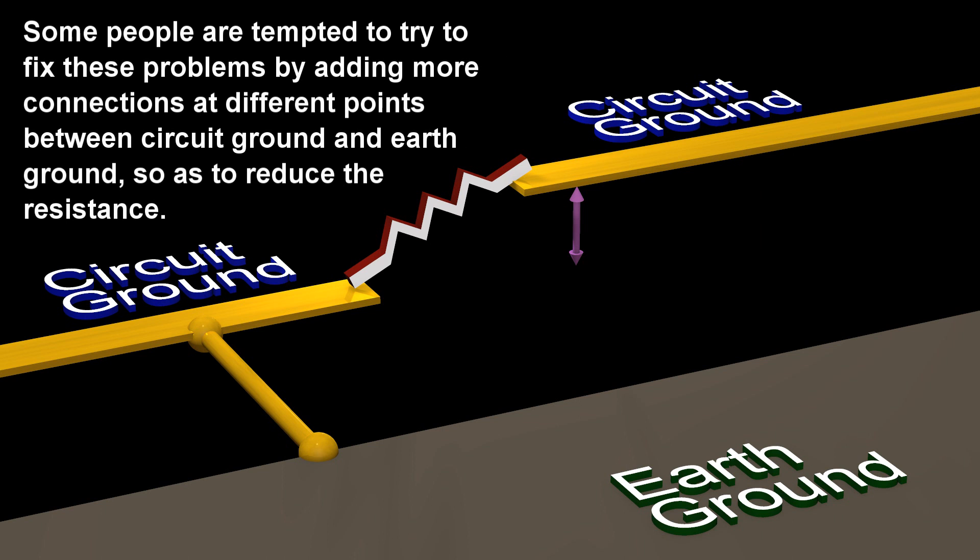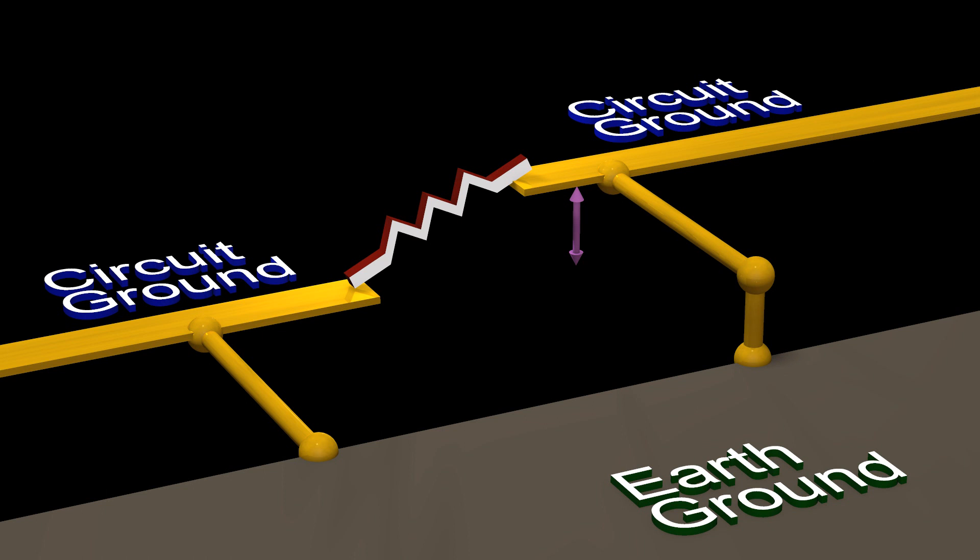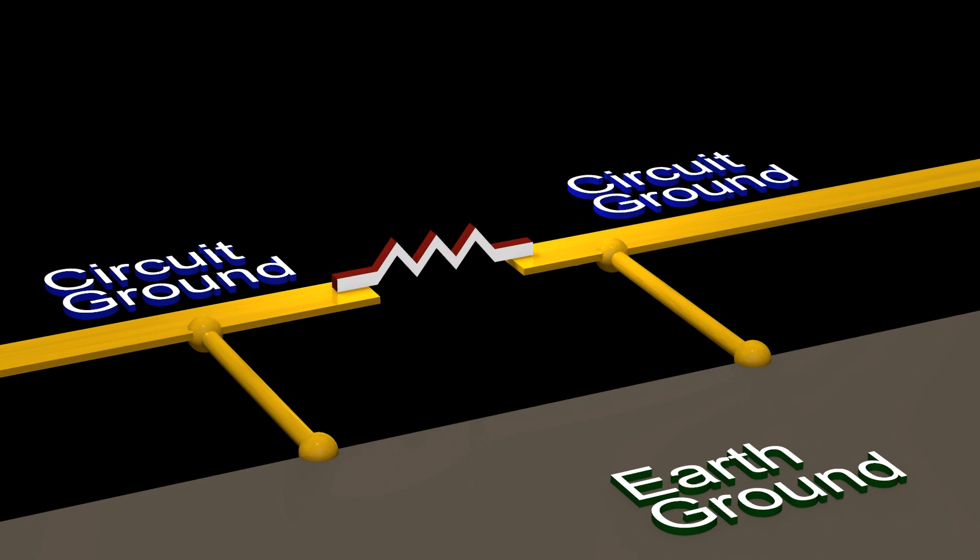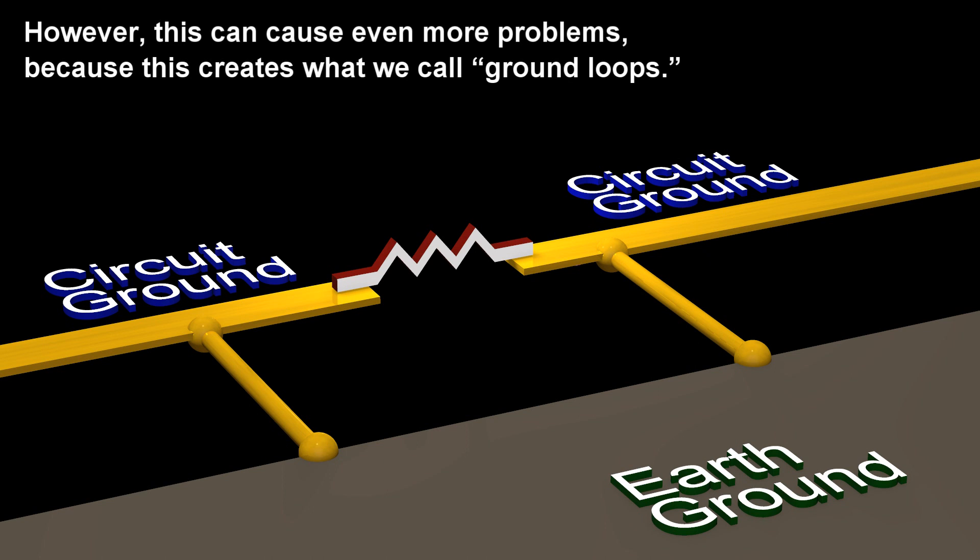Some people are tempted to try to fix these problems by adding more connections at different points between circuit ground and earth ground, so as to reduce the resistance. However, this can cause even more problems, because this creates what we call ground loops.